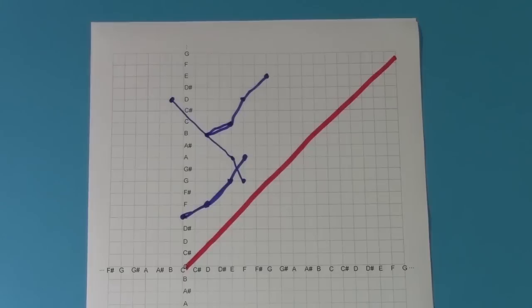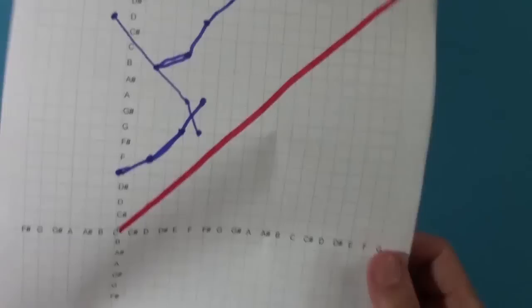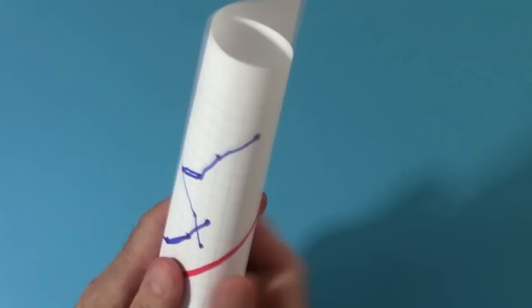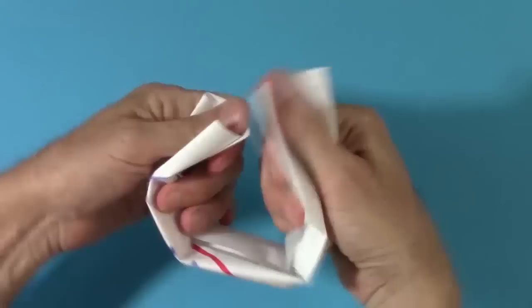But what happens if we take this space of chords modulo the octave? We want all C's equivalent, like our circle of pitch classes. So we have to roll up the space in both the x and y directions. Rolling in either direction gives a cylinder. Then rolling in the second direction gives a torus.